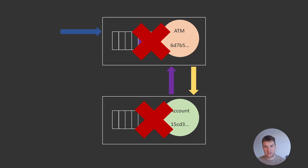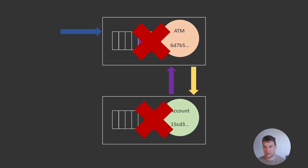Sometimes deadlocks can be more subtle — they won't always be easy to spot. They might happen only in certain circumstances or when things happen in certain orders at the same time. Some common strategies to avoid deadlocks include reducing the number of grain-to-grain calls. A well-designed system with well-designed actors can really help reduce the number of grain calls and thus the potential for deadlocks. Using streaming can also help reduce the potential for deadlocks.